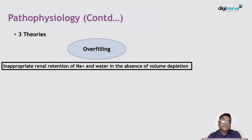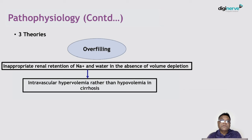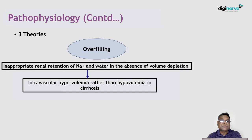In the overfilling theory, there is inappropriate renal retention of sodium and water even in the absence of volume depletion. There is no volume depletion, yet the kidney retains more sodium and water, causing intravascular hypervolemia. This contrasts with cirrhosis, where the total body volume may be increased but intravascular volume is typically low.